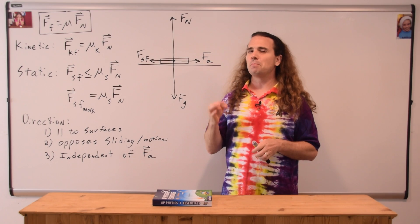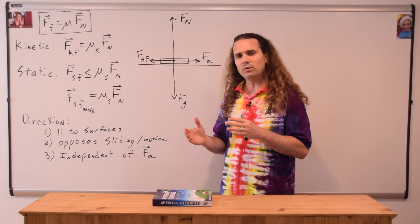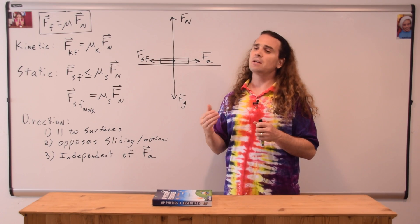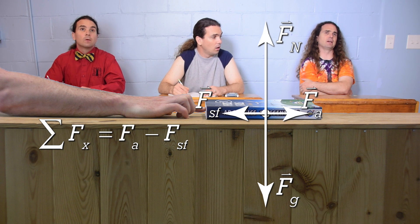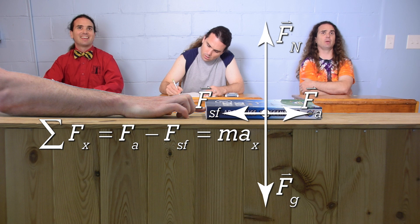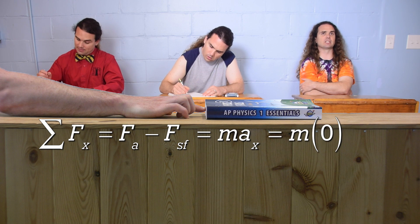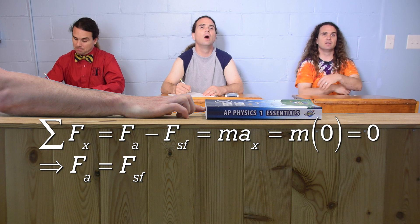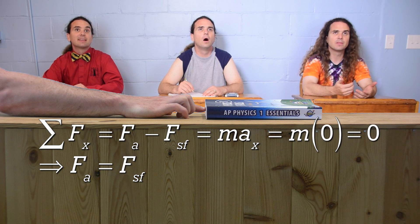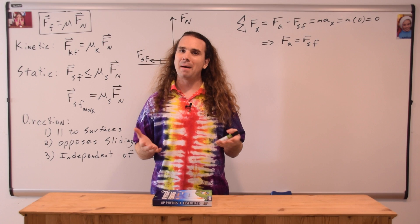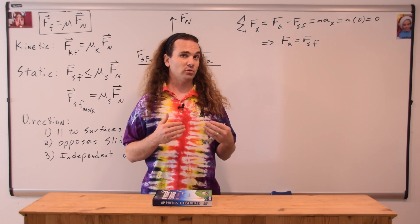Now let's talk about the magnitude of the force of static friction, which will help us understand the less-than-or-equal-to sign in the equation. Bo sums the forces in the x-direction: the net force equals the force applied minus the force of static friction, which equals mass times acceleration. Because the book is at rest, acceleration is zero, so the force applied equals the force of static friction — equal in magnitude and opposite in direction.